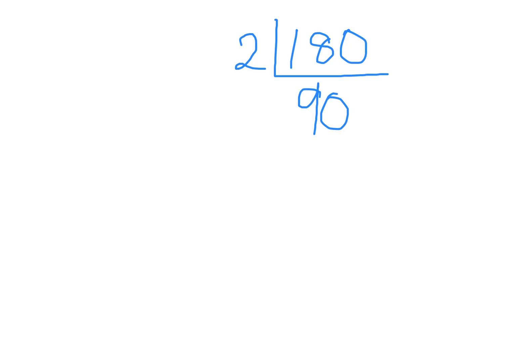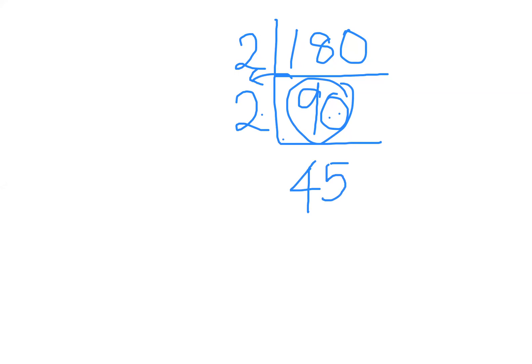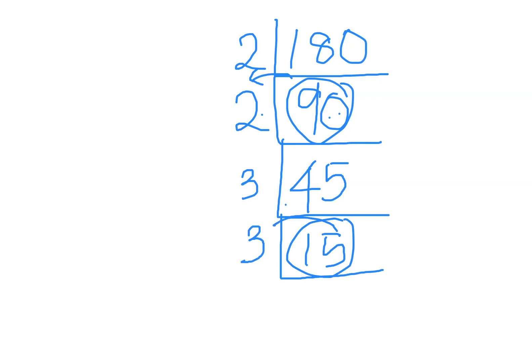Apa lagi kita boleh selesaikan? Boleh bahagi sifir dua tak? Tak boleh. How about sifir tiga? 45 — can we divide it by 3? Very good. Sifir tiga dengan tiga dapat 15. Turun lagi — bahagi dengan sifir berapa sekarang? Boleh bahagi dengan sifir tiga lagi. So 15 bahagi tiga dapat lima.